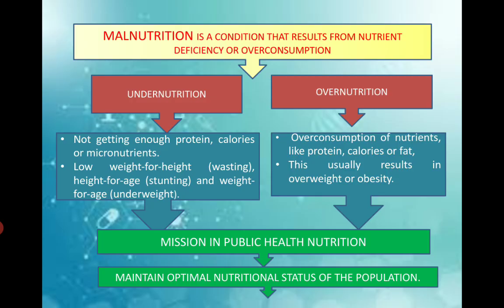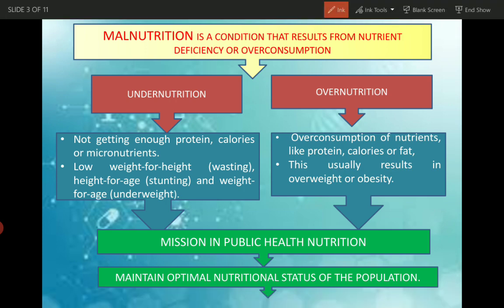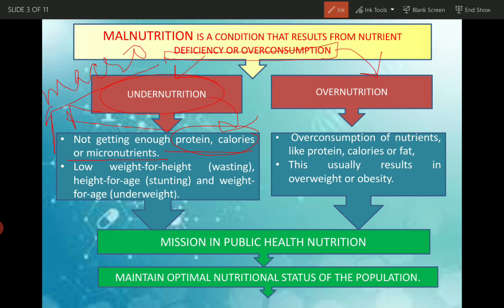Let us understand malnutrition with this chart. Malnutrition is a condition that results from nutrient deficiency or overconsumption. If it is deficiency then it is undernutrition, and if it is overconsumption then it is overnutrition. In undernutrition, you are not getting enough proteins, calories or micronutrients. Protein and calories are macronutrients - needed in large quantities - while micronutrients are needed in little quantities. If we are deficient in any of these, it is undernutrition.